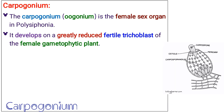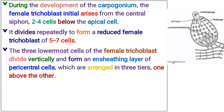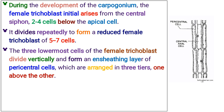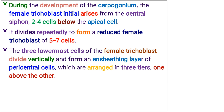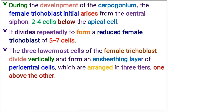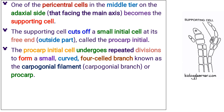The carpogonium, that is the oogonium, is the female sex organ in Polysiphonia. It develops on a greatly reduced fertile trichoblast of the female gametophytic plant. During the development of the carpogonium, the female trichoblast initial arises from the central siphon, two to four cells below the apical cell. It divides repeatedly to form a reduced female trichoblast of five to seven cells. The three lowermost cells of the female trichoblast divide vertically and form an ensheathing layer of pericentral cells, arranged in three tiers, one above the other. One of the pericentral cells in the middle tier, on the adaxial side, that is facing the main axis, becomes the supporting cell.